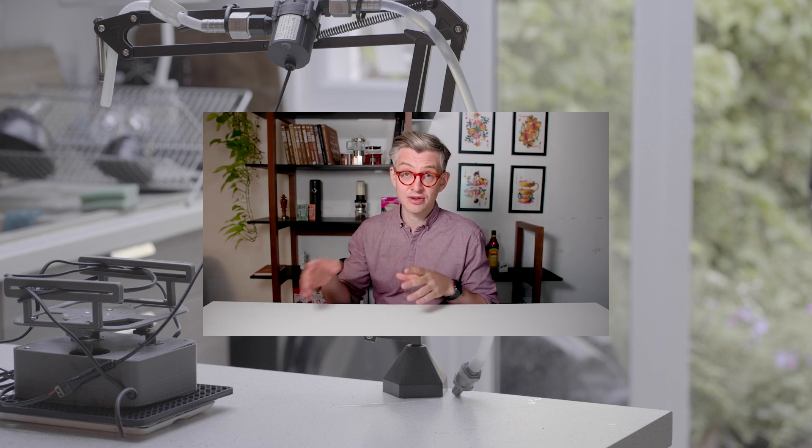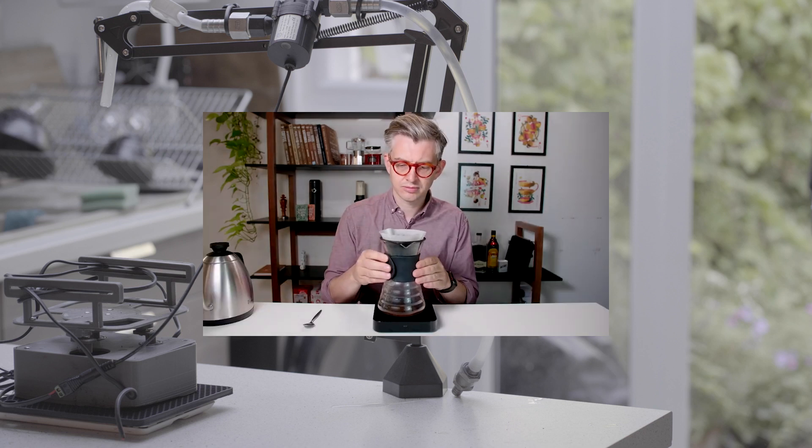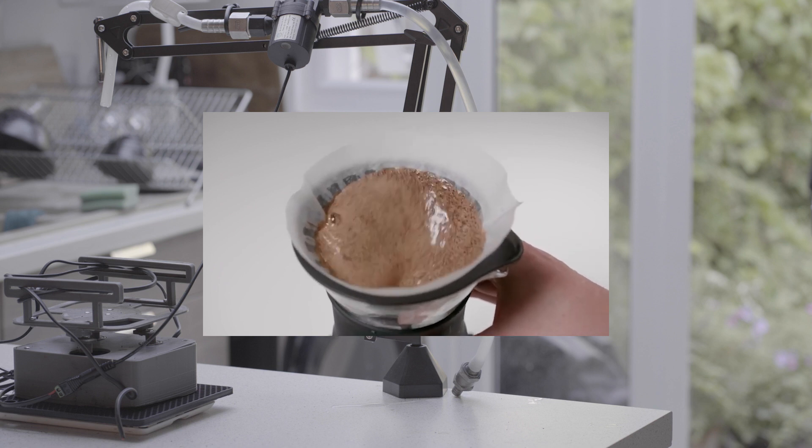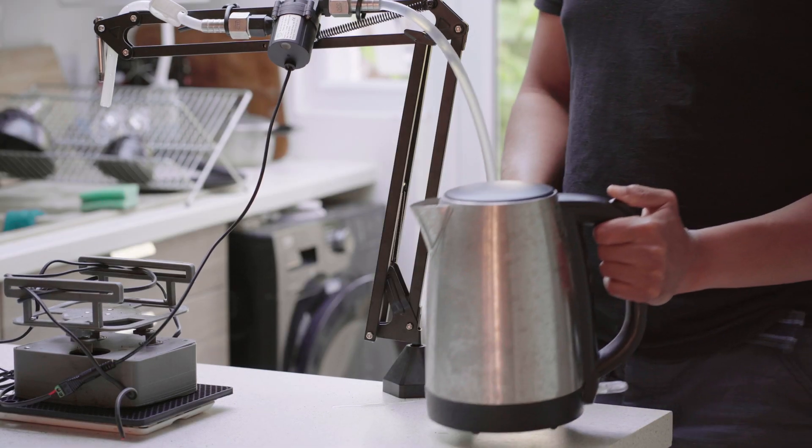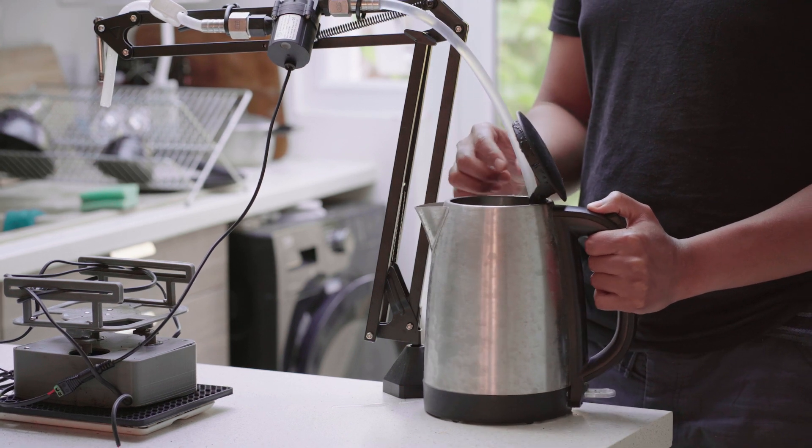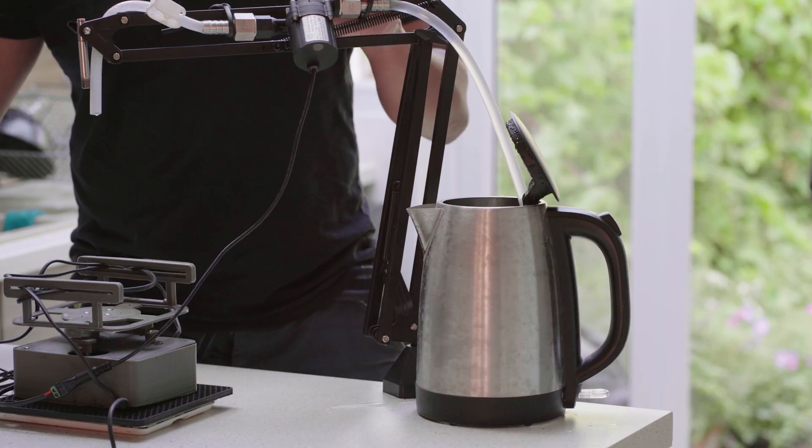As soon as you've added your water, put the kettle down and grab your brewer and begin to swirl in a circular motion. Hi, that was James Hoffman, a world barista champion and the creator of the ultimate V60 technique.